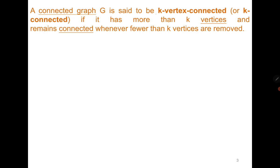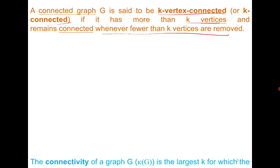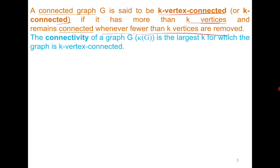A connected graph is K-vertex connected, and the more general notation is K-connected. In case of K-edge connected, the word 'edge' is always there, but in the case of K-vertex connected, we simply call it K-connected. It has more than K vertices and it remains connected when fewer than K vertices are removed — the same concept used for edge connectivity. The largest K for which it is K-connected gives the connectivity of the graph, which is vertex connectivity denoted as κ(G).